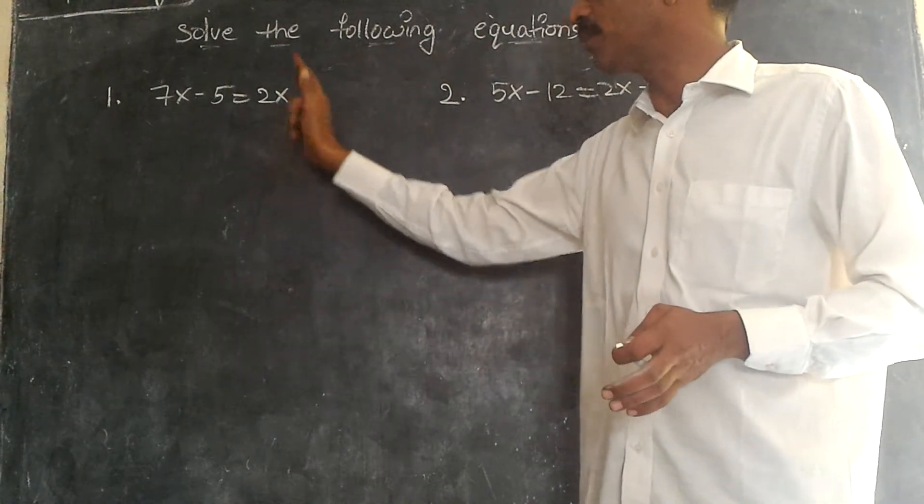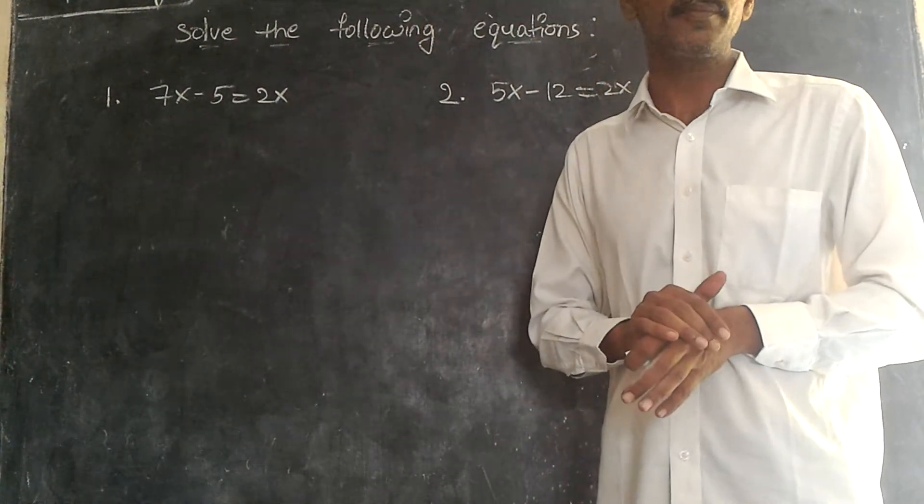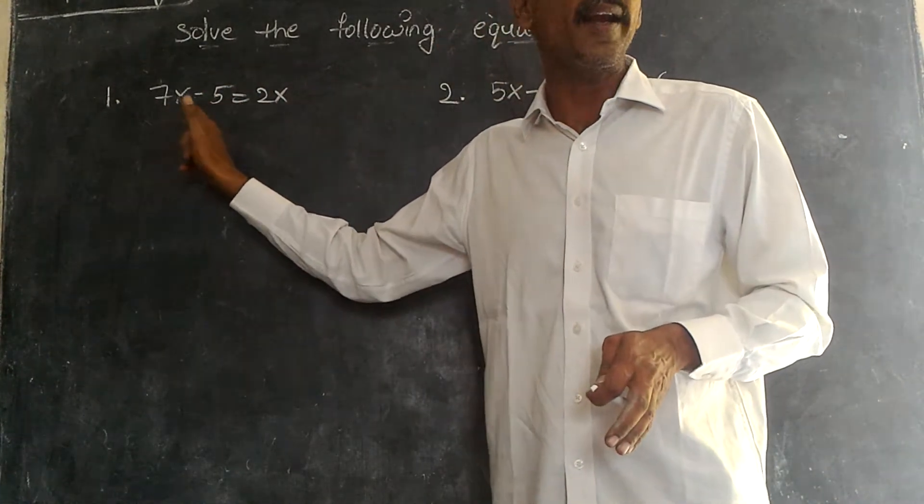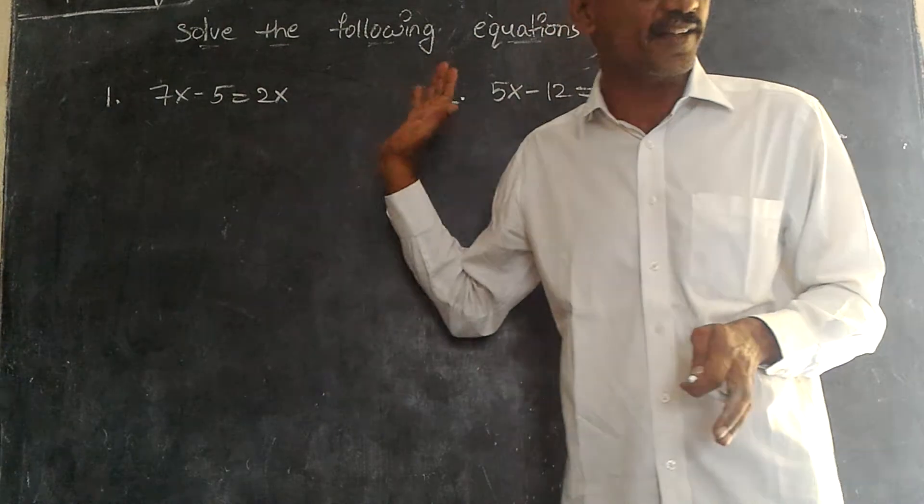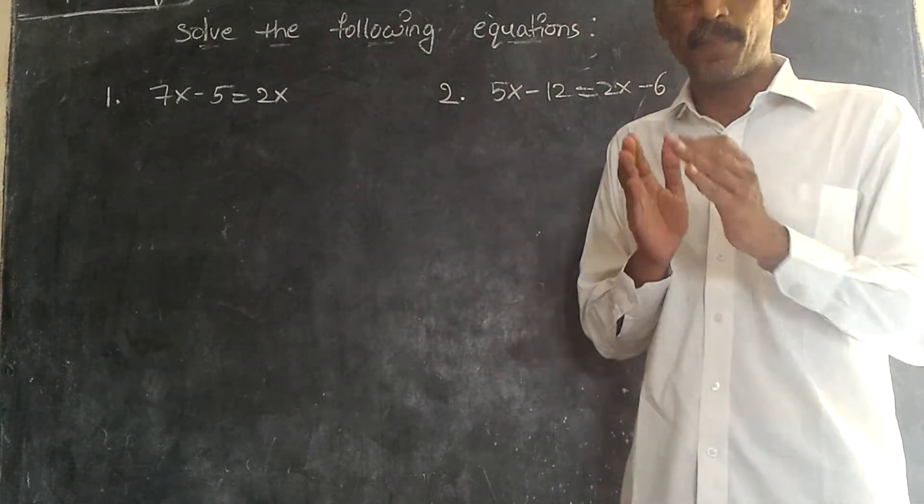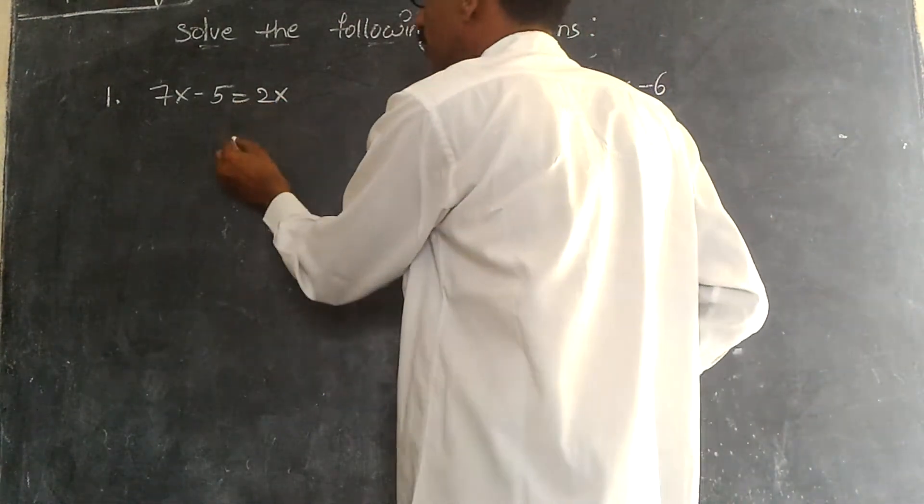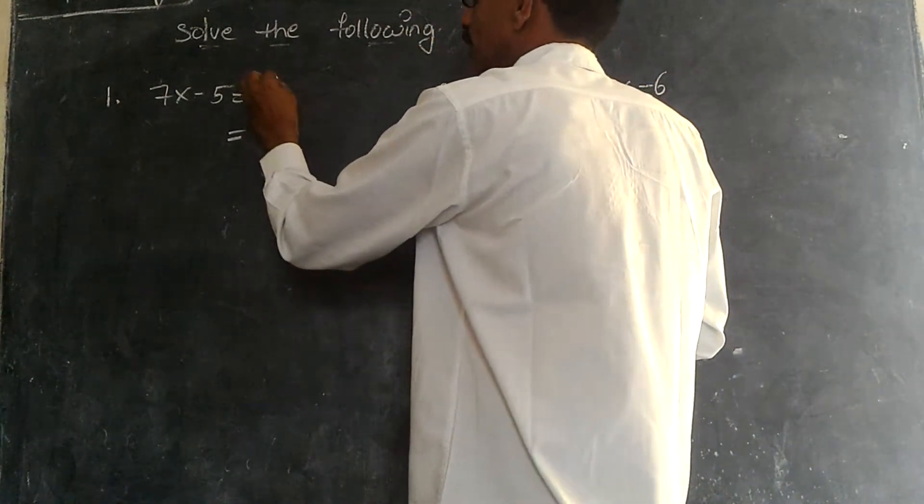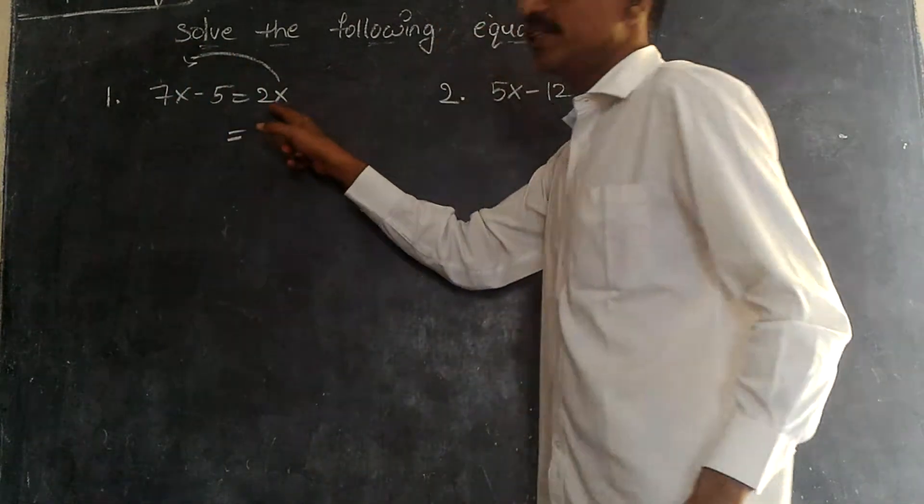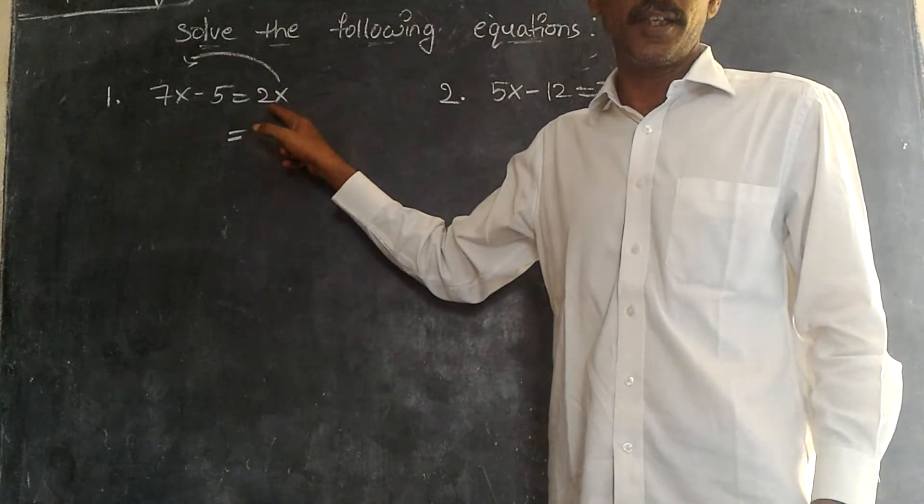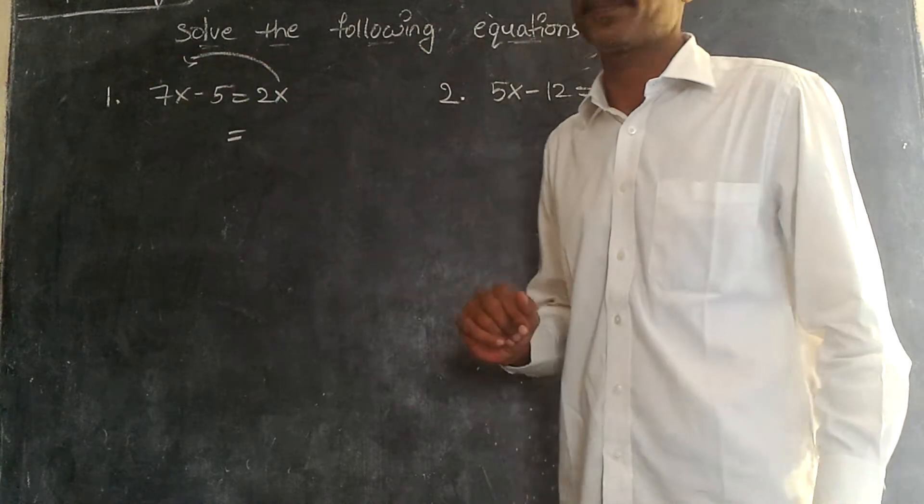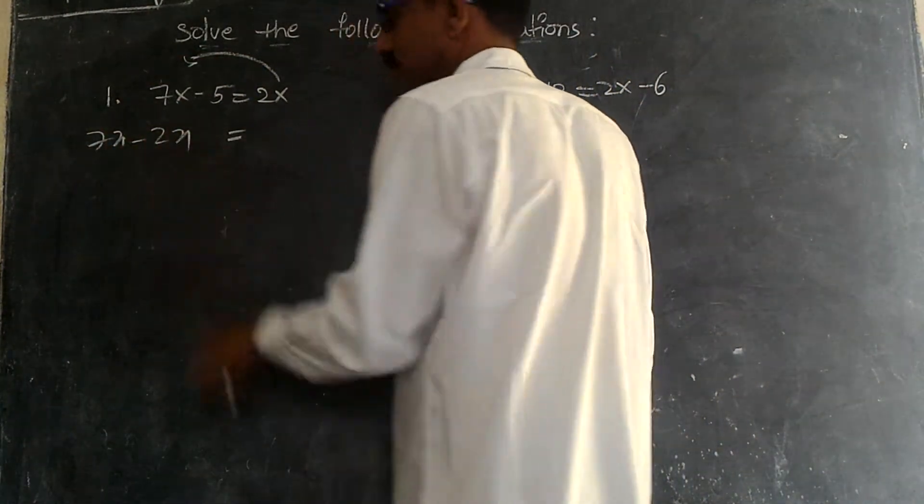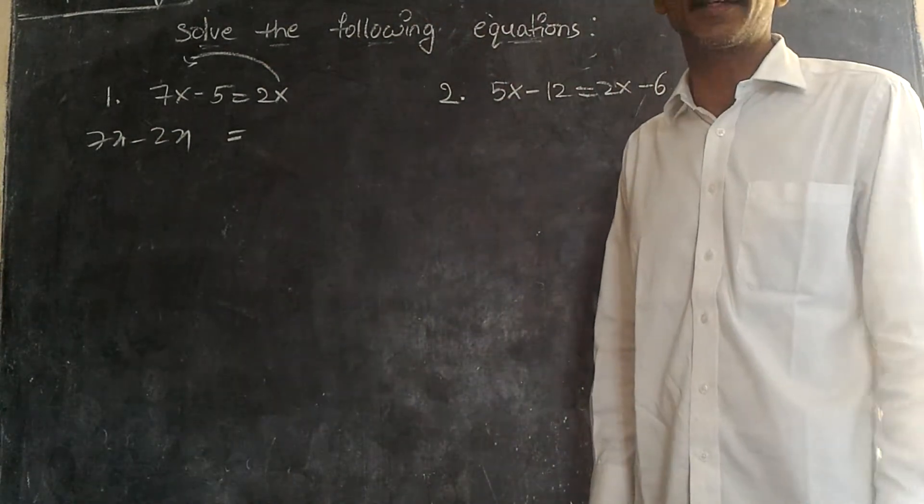Here one variable and here one variable one constant. In LHS we have one variable and a constant. In RHS we have only one variable. Write it down, equals. By transposing 2x, it is a variable right. By transposing this, 7x minus 2x.